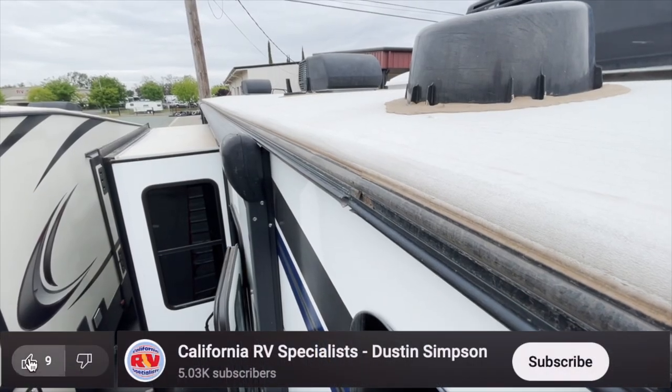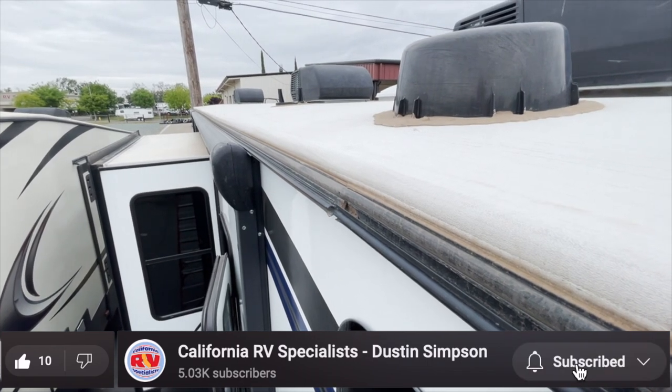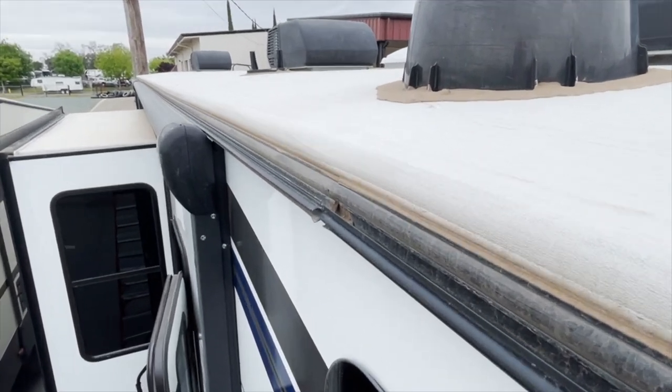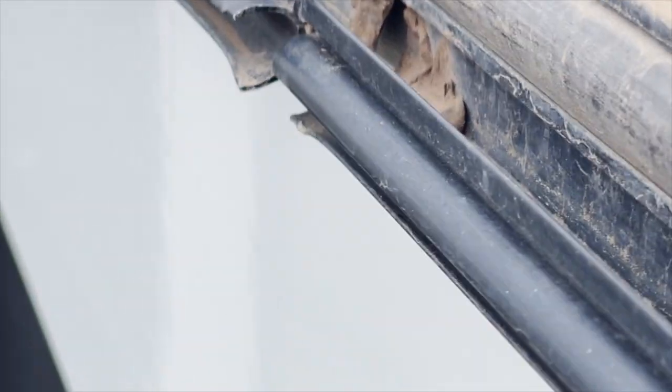Hey, so I'm up on top of this 2019 Grand Design Momentum and what I found while I'm doing the inspection is the awning rail. It's pulling loose from the coach and so what I want to do is try to get the right angle here to show you.